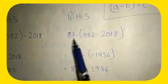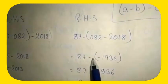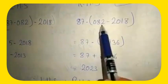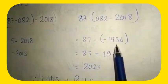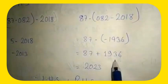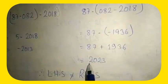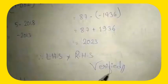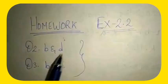Now for the RHS: 87 minus (82 minus 2018). Solving the bracket: 82 minus 2018 — since minus 2018 is bigger, the answer is minus 1936. So we get 87 minus (minus 1936), which becomes 87 plus 1936, giving 2023. LHS is not equal to RHS, so the associative property is verified.